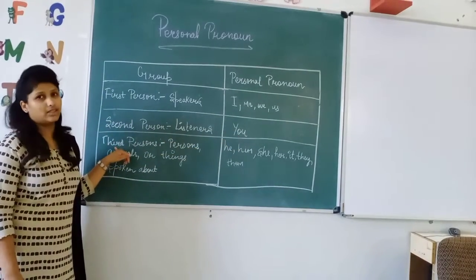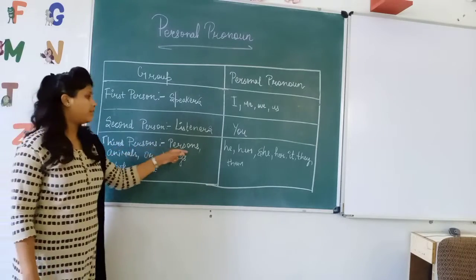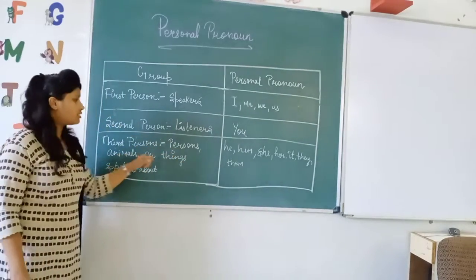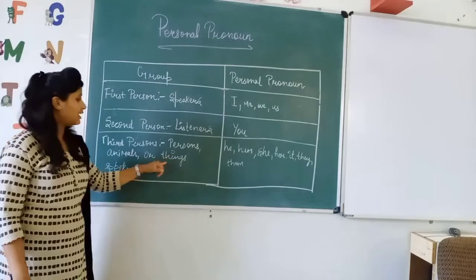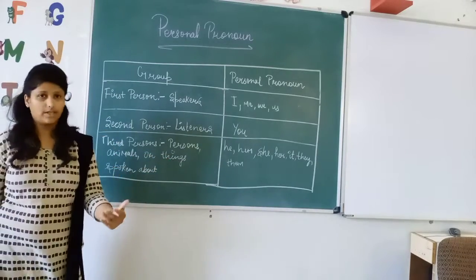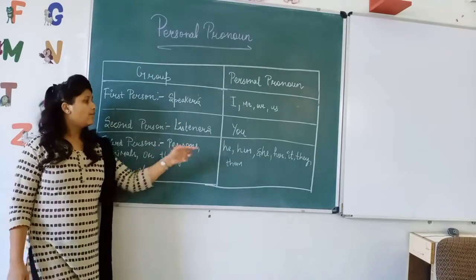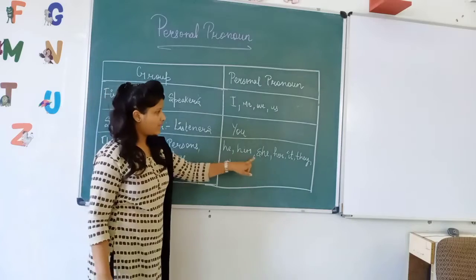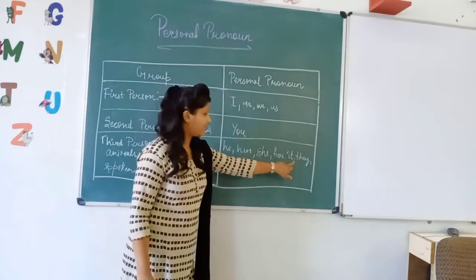Then comes the third person. Third person can be persons, animals or things for which the sentence has been spoken. So for third person we use he, him, she, her, it, they, them.